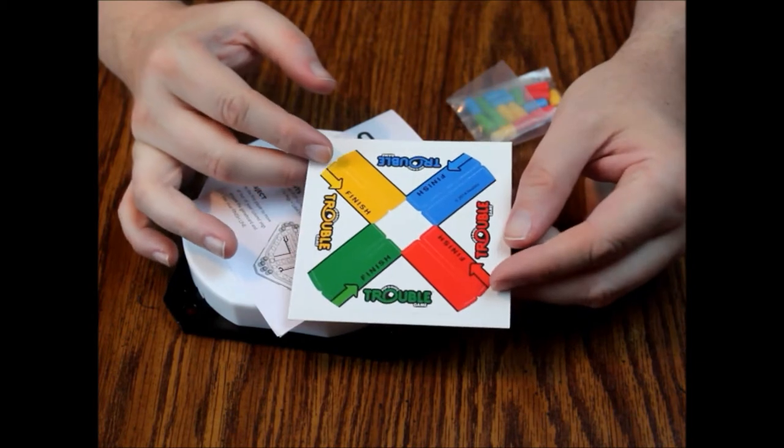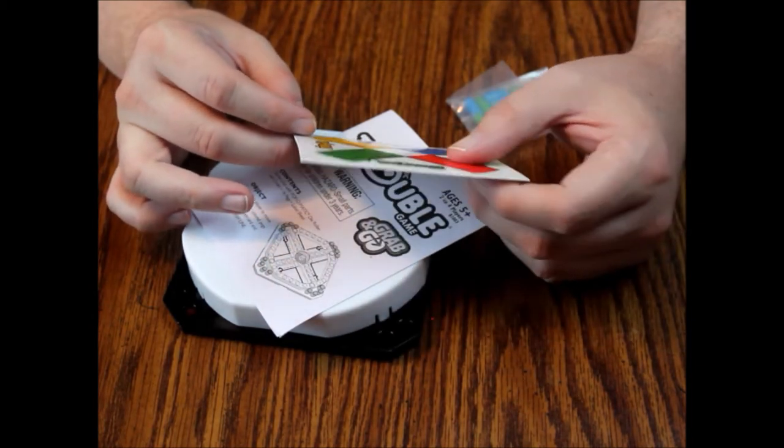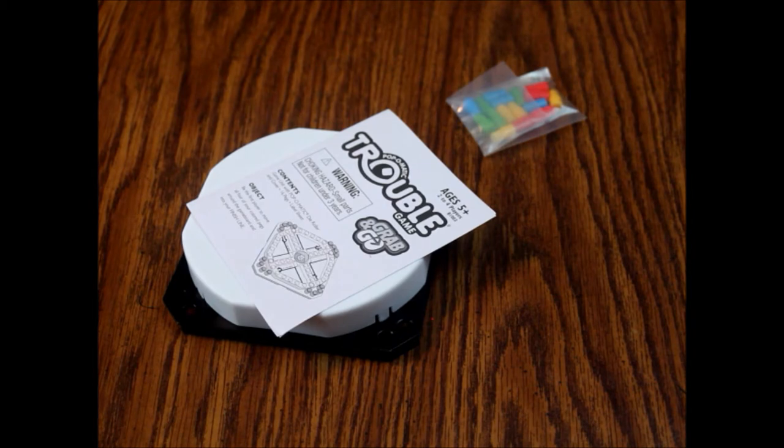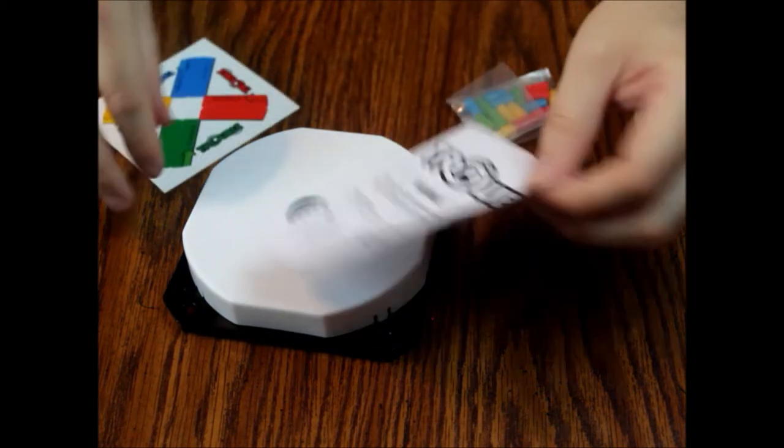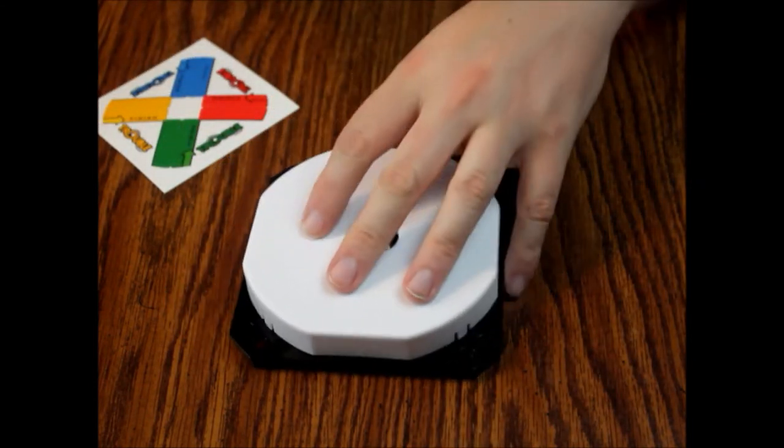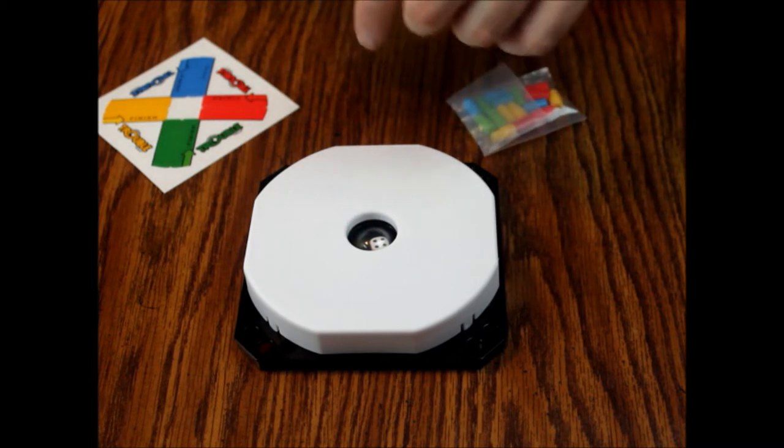All right, what else we got here? There's some stickers. Let's get the box out of the way. So we got our color-coded stickers. Yeah, you'll want to have an adult put these on.